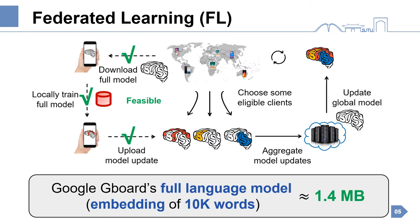Federated learning proposed by Google is a potential solution to collaborative training. In each round, some eligible clients are chosen to download the full model and then upload the model updates after local training. The cloud server aggregates the model updates to update the global model. Google has deployed federated learning on its Android keyboard, called Gboard, to polish the language model. The model contains the embedding of 10,000 rules, and the size is roughly 1.4 megabytes.